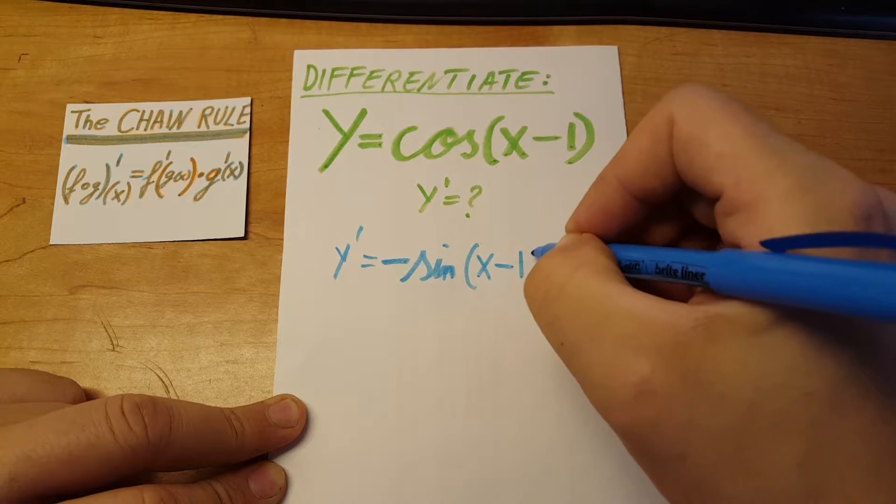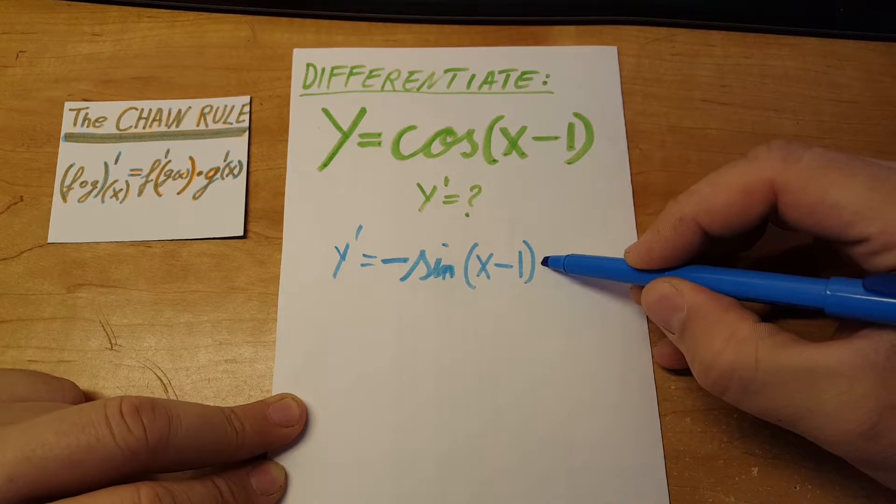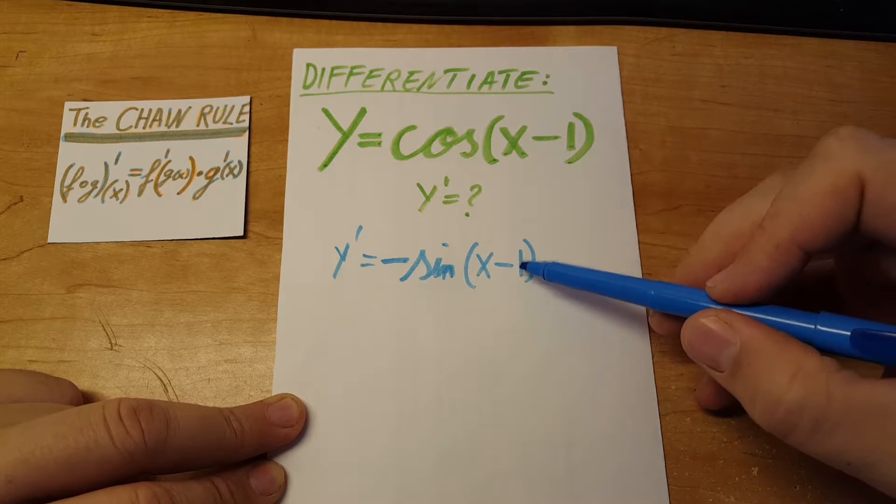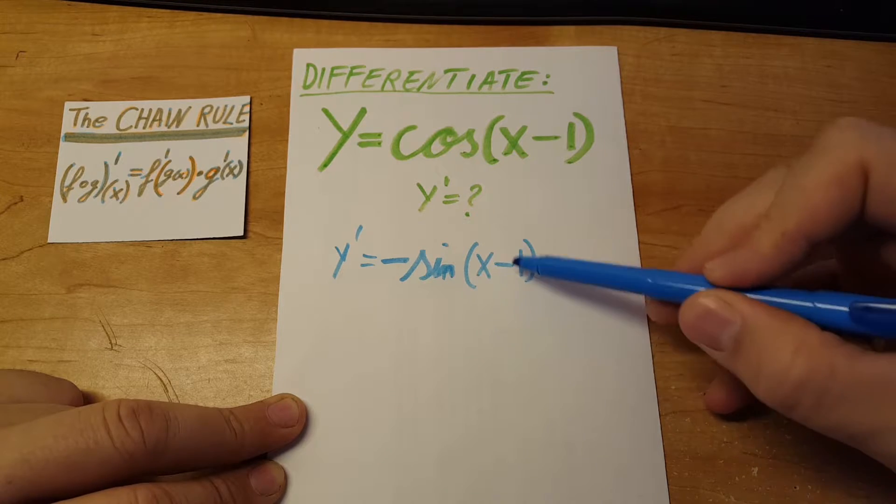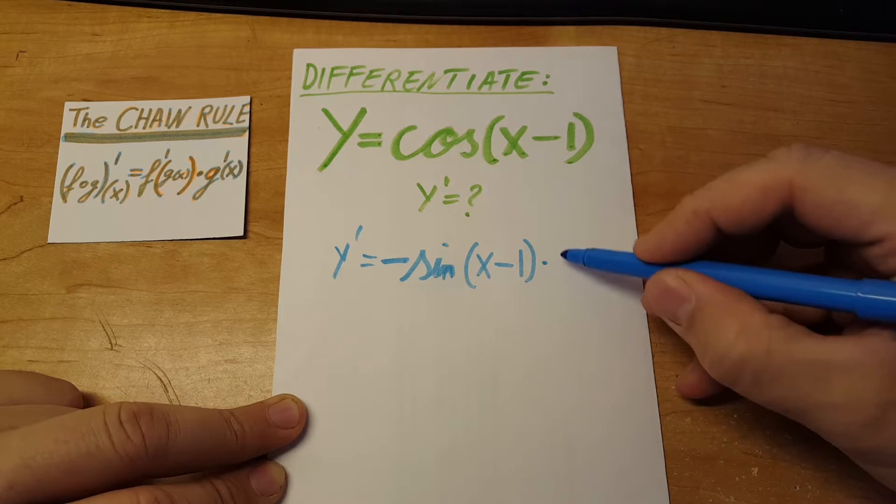Leaving the argument untouched, we're going to multiply it by the derivative of what's inside the argument. So the derivative of x minus 1 is just simply 1.